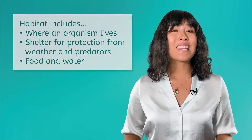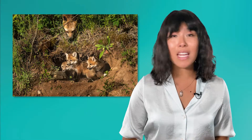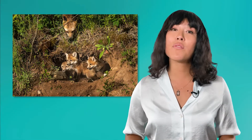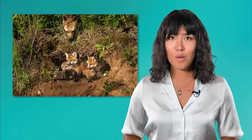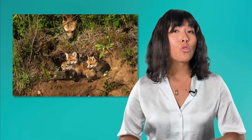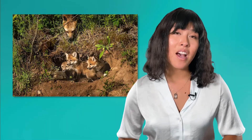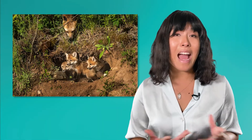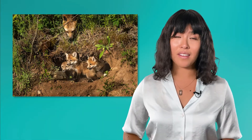The red fox makes its shelter in a den. The fox den can be underground, in a cave, among rocks, or even in a hollow tree. When looking for a suitable habitat, the red fox will also look for ample food and access to water. They will often drink water directly from a freshwater source, like a river or stream.